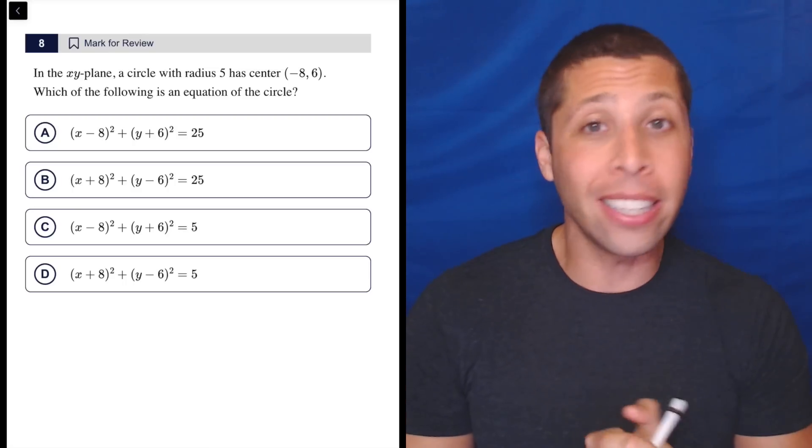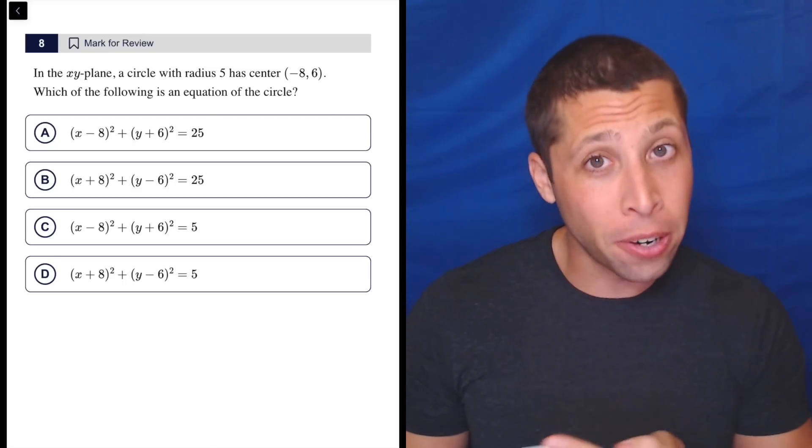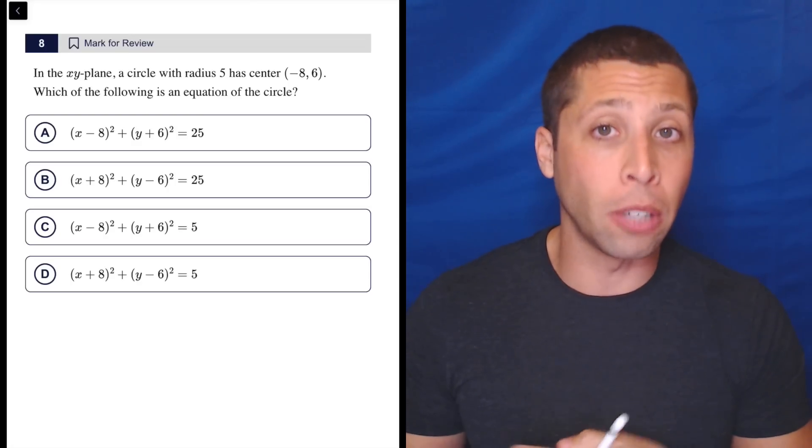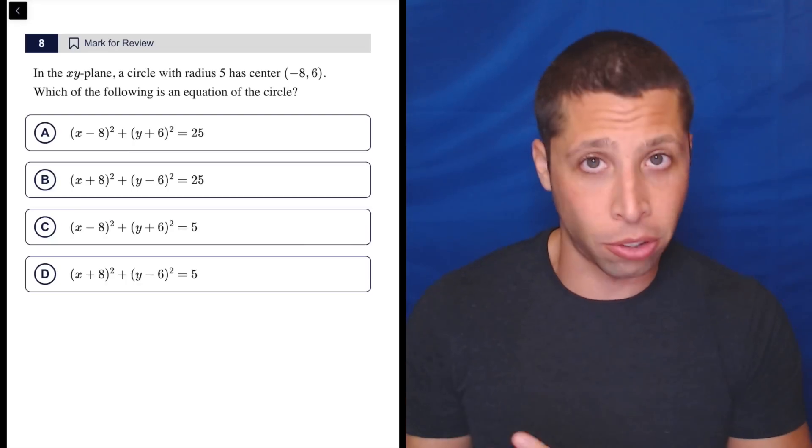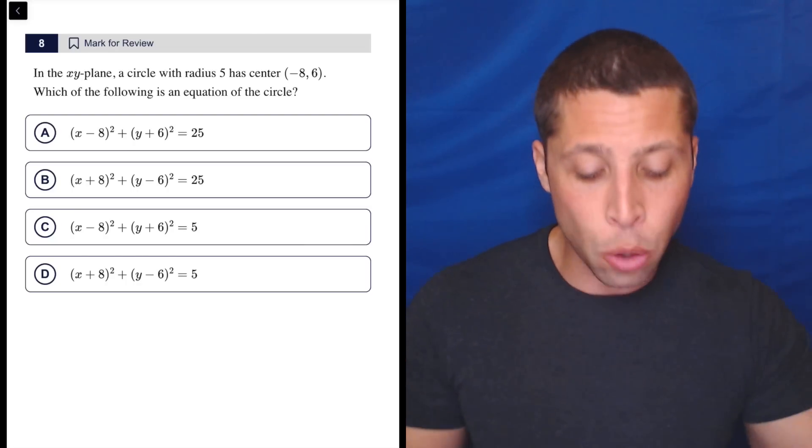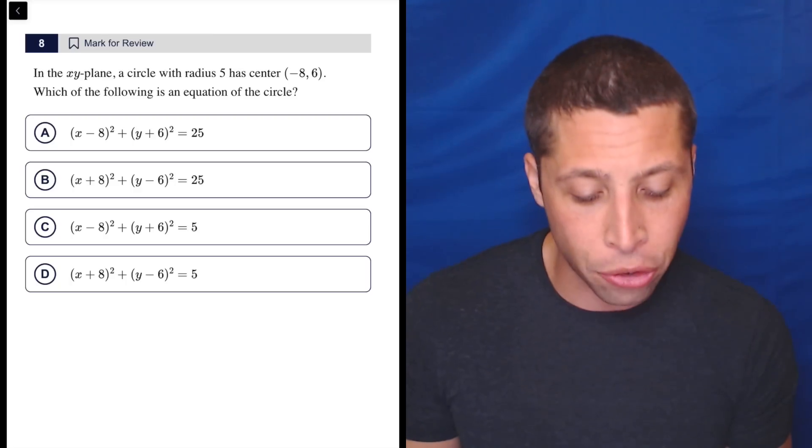But if you are scoring anything less than 700, maybe even 750 in math, then you're probably going to need to do this a little bit of a longer way because you shouldn't trust yourself. But if you are already scoring 750 pretty consistently, you hopefully know how to build an equation that has these properties because you know the circle formula.